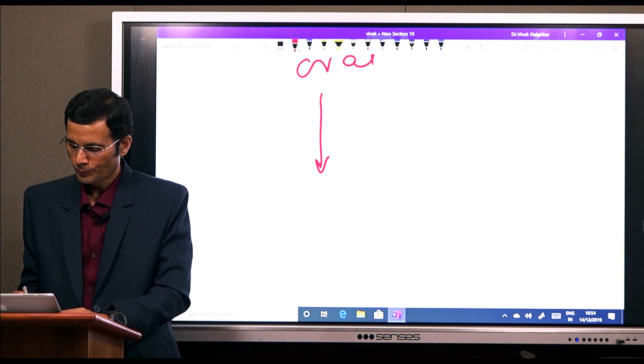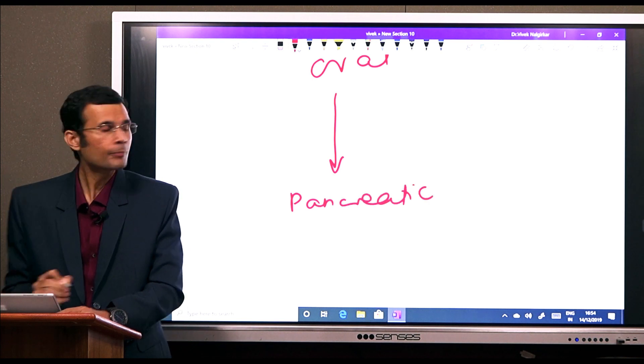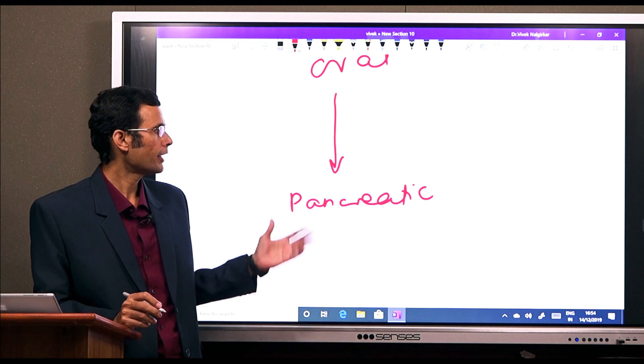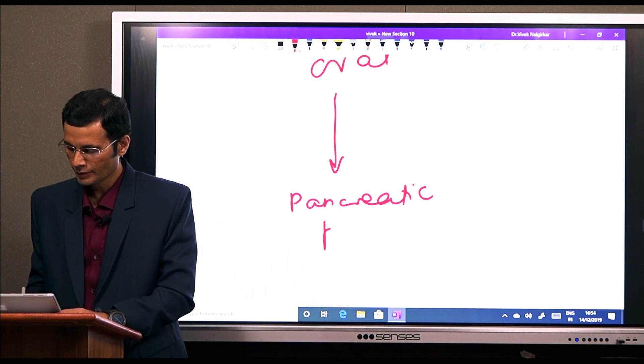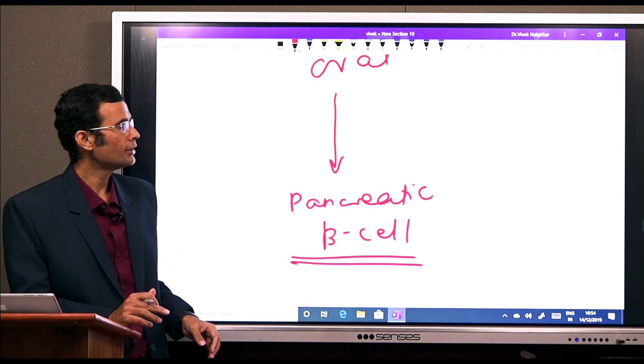So oral glucose, after entering the bloodstream, will directly go to the pancreatic beta cell and cause insulin secretion.